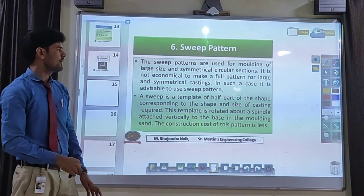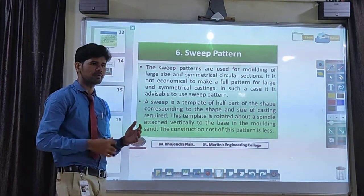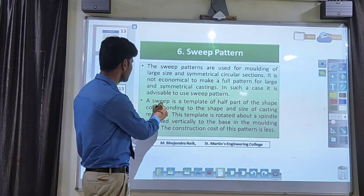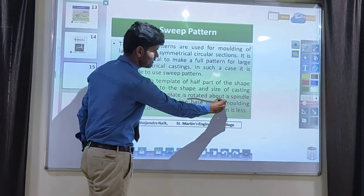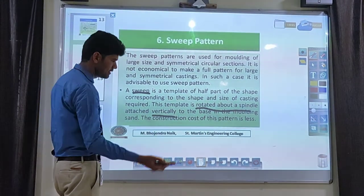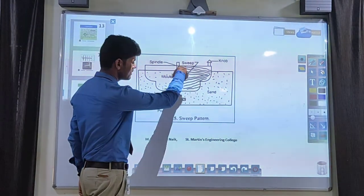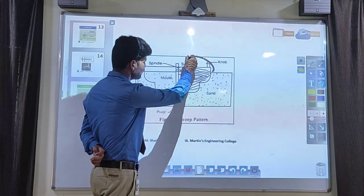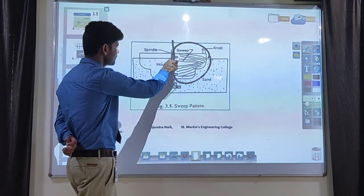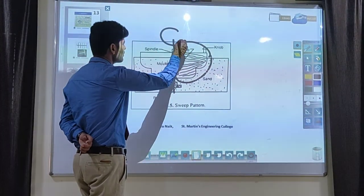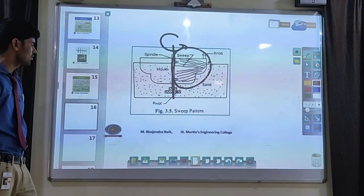Another type is called a sweep pattern. When a pattern has a symmetrical object, you don't need to produce the entire object — you produce only half of the piece. The sweep pattern means you rotate the pattern along the respective direction, either vertically or horizontally depending on the pattern. Half of the object is prepared and attached to a spindle. This spindle rotates along the vertical axis, and the same object is replicated on the other side. That kind of pattern is called a sweep pattern.